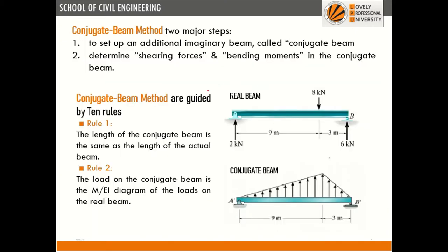There are two major steps in the conjugate beam method. First, set up an imaginary beam called the conjugate beam. Second, calculate shear force and bending moment at various points in the conjugate beam.